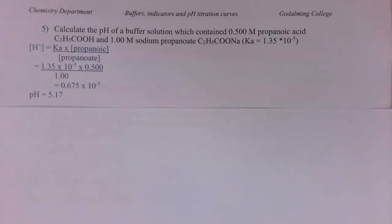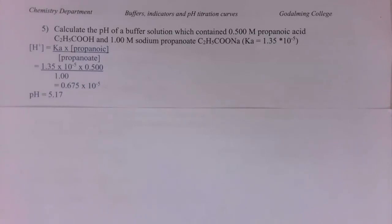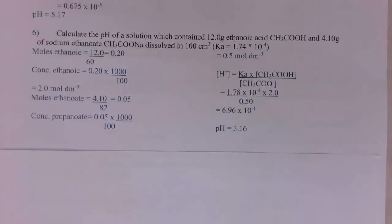Moving onto the second page of calculations: the first example uses 0.5 mol dm⁻³ propanoic acid with 1 mol dm⁻³ sodium propanoate and a given Ka value — rearrange the expression and put the numbers in to get pH 5.17. The second example is similar but you've been given grams, so first work out concentrations, then put them into the Ka expression to get a pH of 3.16.